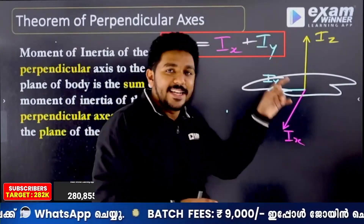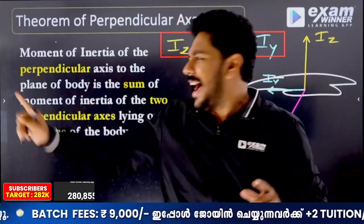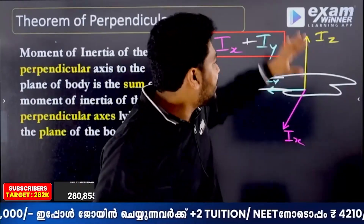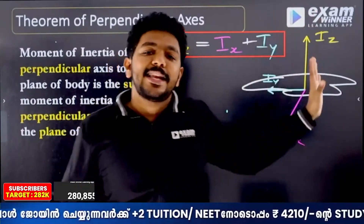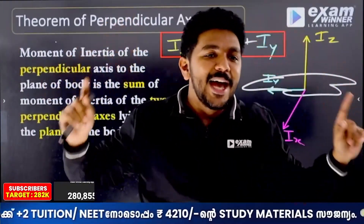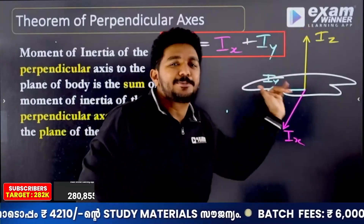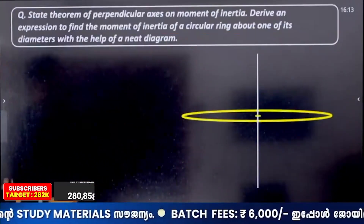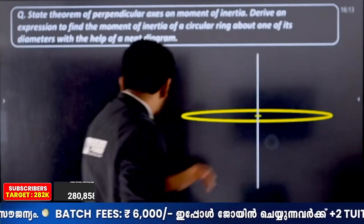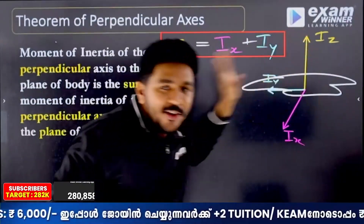Lying on the plane of the body is the sum of moment of inertia. The theorem of perpendicular axis lying on the plane is the basic concept: Iz is equal to Iy plus Ix. You will have one more thought — the application is equal to 2i. If you want the statement or the figure, then we get Iz = Ix + Iy.